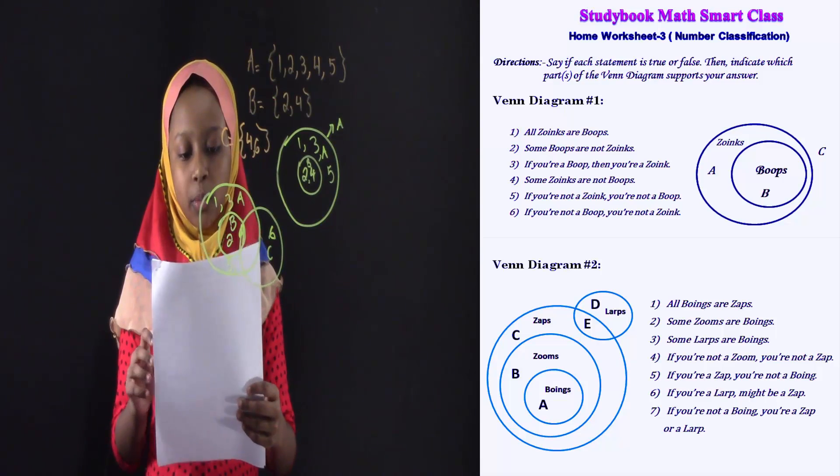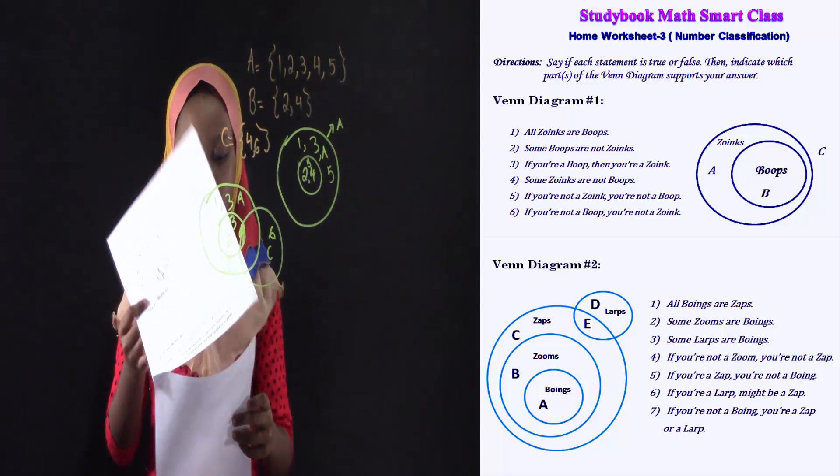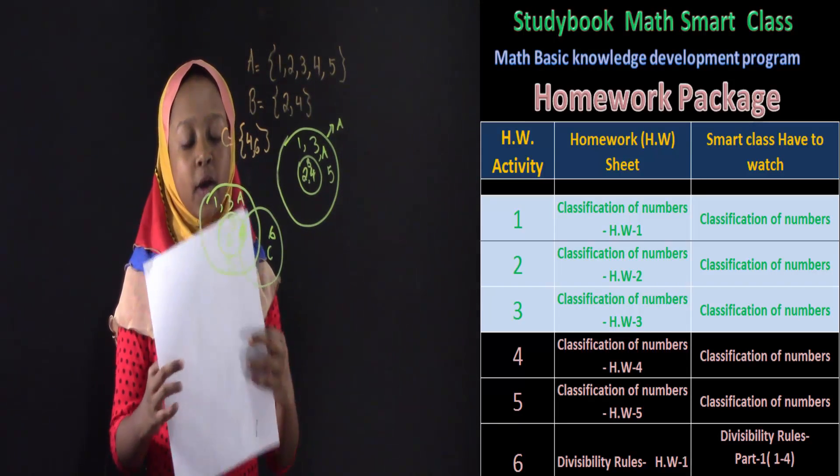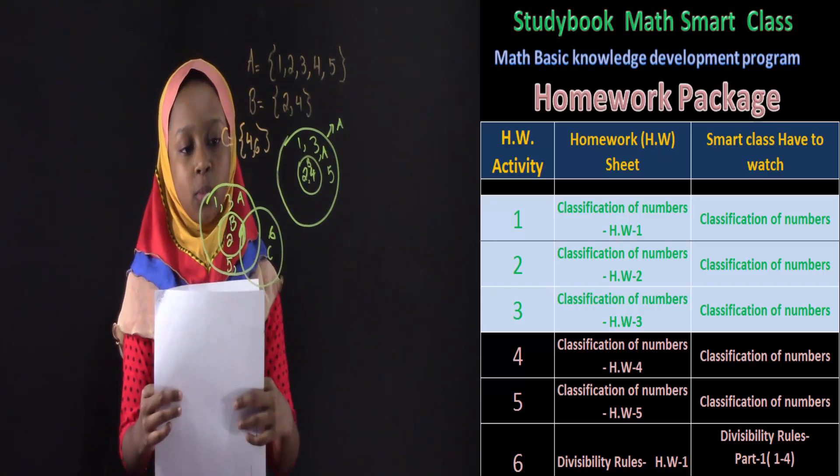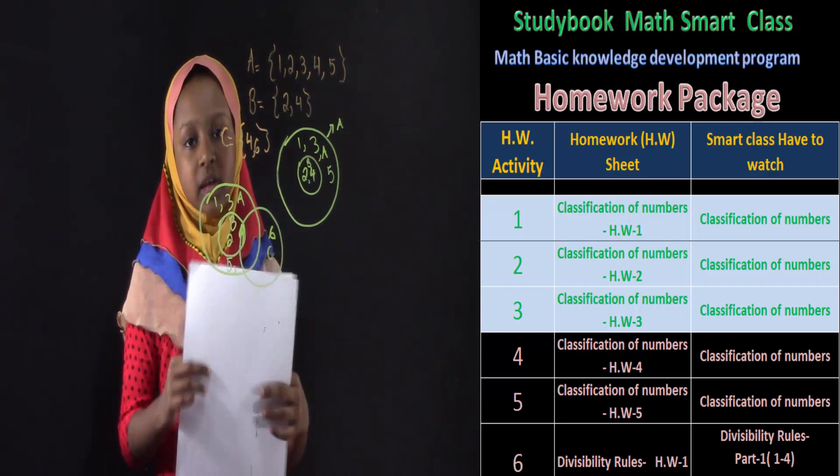And, doing this homework sheet number three for number classification, I got 11 out of 13. I only got two wrong. I hope you do better, or you have the same way. Thanks for doing the homework.